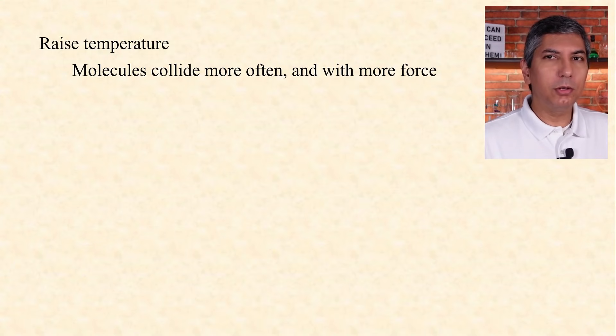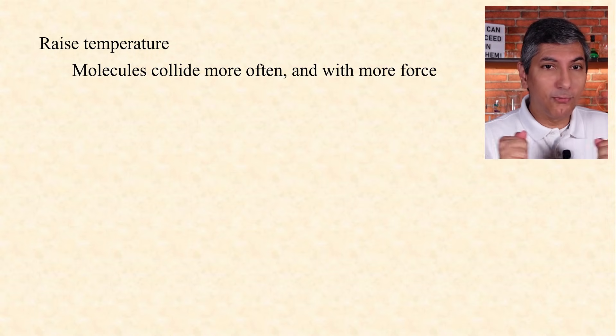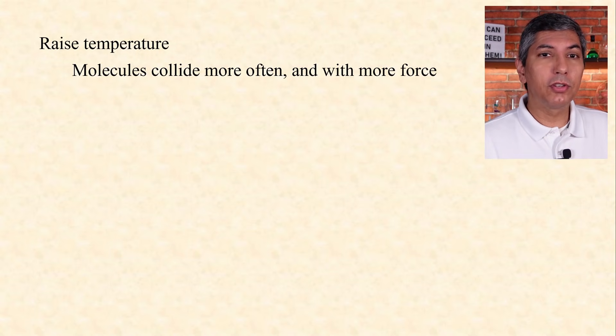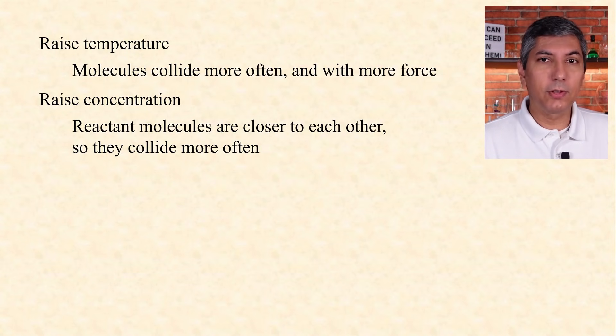Raising the temperature is a very effective way to make a reaction go faster, because when the temperature increases, molecules collide more often and they collide with more force, because they're moving faster. That allows more of the collisions to be effective and produce a reaction. Raising the concentration of the reactants also works, because when reactant molecules are closer to each other, they collide more often, leading to more effective collisions.